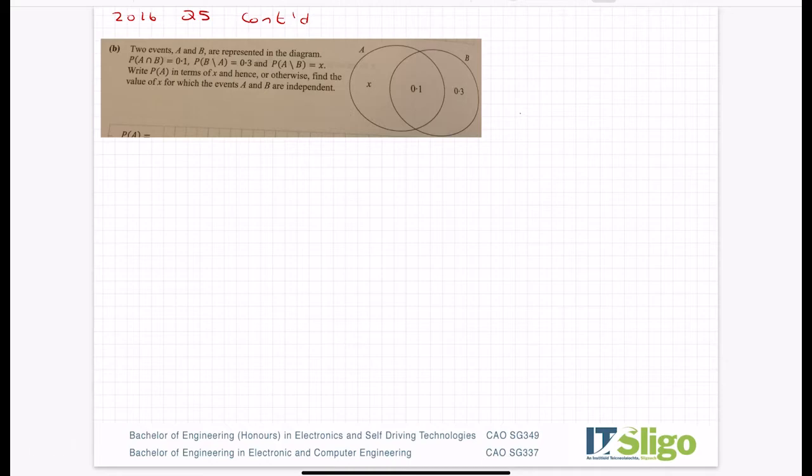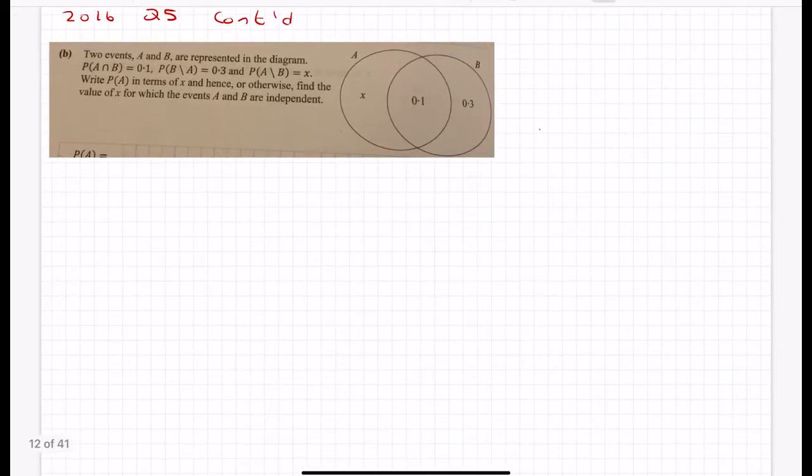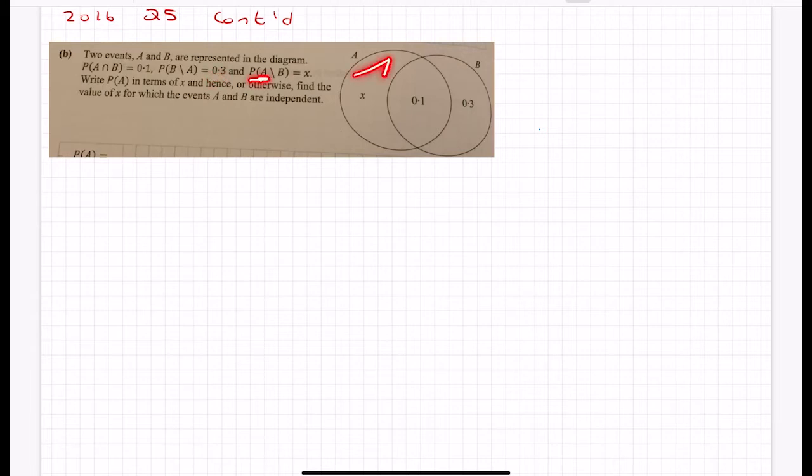Right, the next part of that question. Two events A and B are represented in the diagram. The probability of A intersection B is 0.1, shown here it's the overlap. The probability of B not A - so this out here is B not A because we don't want to include that circle A - so B not A is out here, that's 0.3. A not B is out here, that's X. Write the probability of A in terms of X, and hence or otherwise find the value of X for which the events A and B are independent.